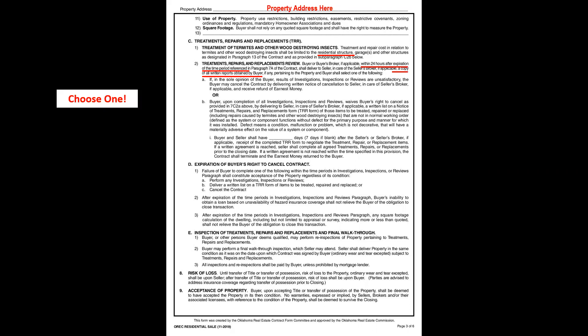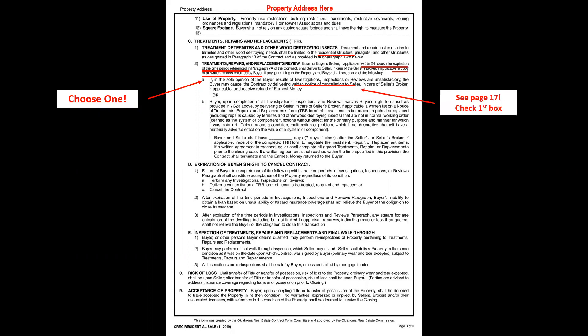After the inspection period ends, the buyer must choose one of two paths. Path A: if inspections were unsatisfactory, they cancel the contract. This cannot be done by a phone call — everything in real estate is in writing. You must complete the Written Notice of Cancellation document and check box one, indicating inspections were unsatisfactory. There is a separate document to get earnest money returned, but without the Written Notice of Cancellation, the buyers are still moving toward closing.